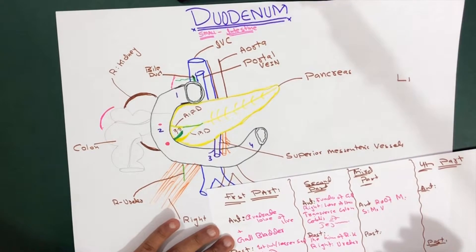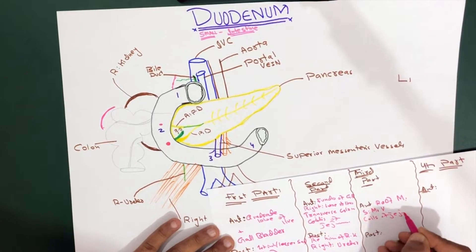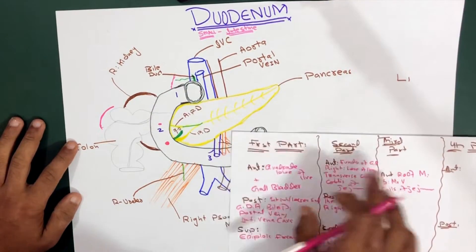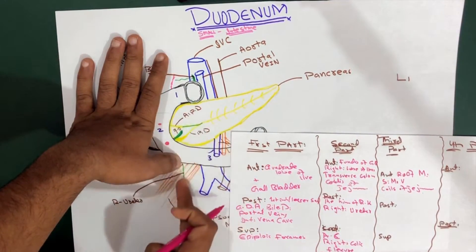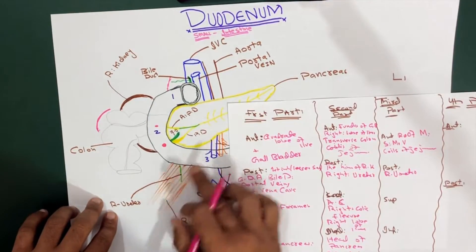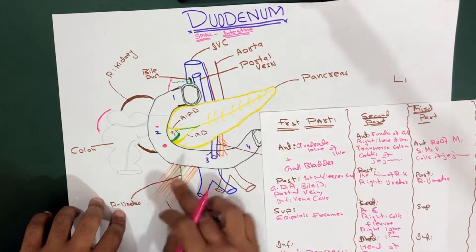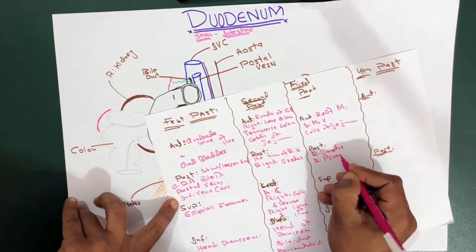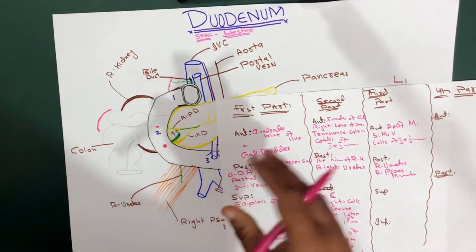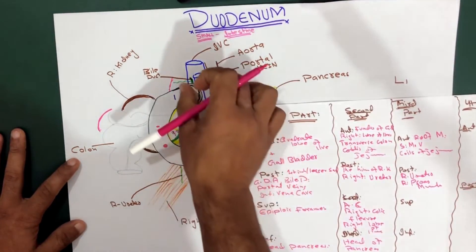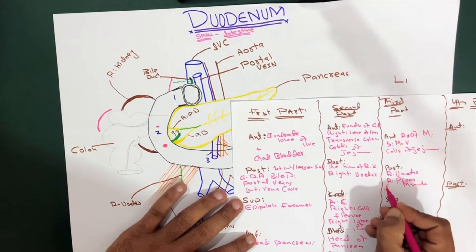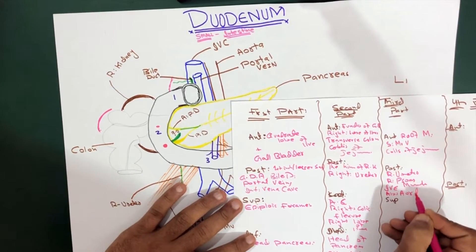Both veins and arteries are included in the superior mesenteric vessels. The third anterior structure is the coils of jejunum. For the posterior relations, the first structure is the right ureter, which is on the posterior side, and the right psoas muscle — so we add up the right psoas muscle. Two other large structures passing posteriorly are the inferior vena cava and the abdominal aorta. So the inferior vena cava and abdominal aorta are also posterior to the third part.